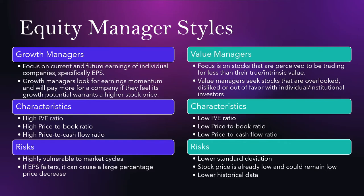The risks of value-type companies are that they tend to have a lower standard deviation — they don't fluctuate as much since they tend to be larger companies. However, the stock price tends to already be low and could remain low. There is no guarantee that these companies will come back into favor, and sometimes investors just don't realize the value, so the price stays low. Another risk is that they have lower historical data, meaning their stock price may have been low for previous years as well.